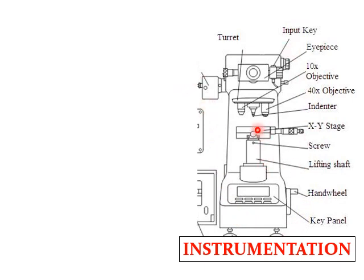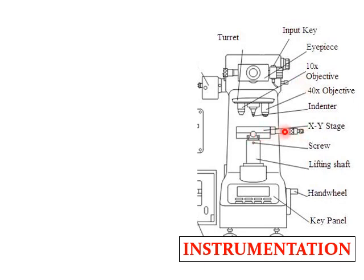A load is placed from the top surface. The testing sample is placed on the anvil with the help of a lifting shaft and handwheel. A diamond square-based pyramid indenter is placed and comes in contact with the testing sample. After an impression is formed, the diagonal length is measured with the help of an optical microscope, which is provided with two objective lenses — 10x and 40x. Both the x and y directions can be measured with the help of an x-y stage.